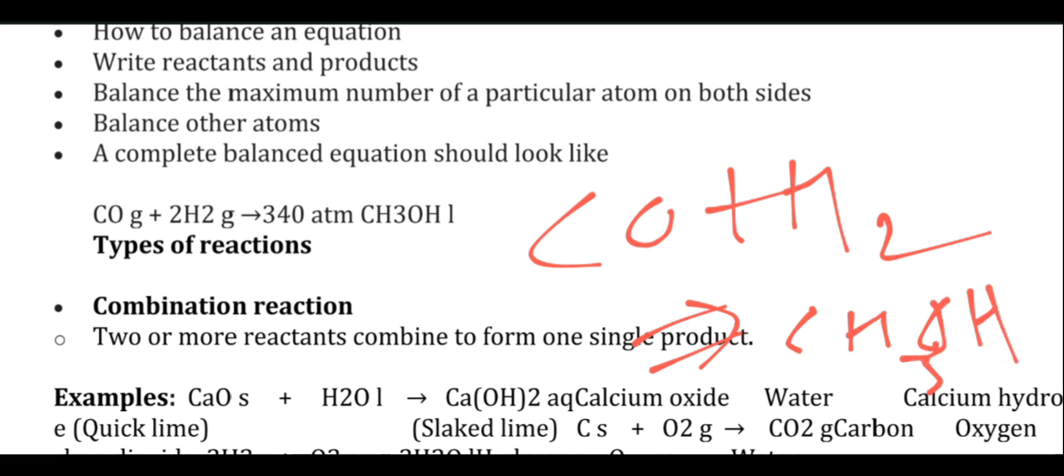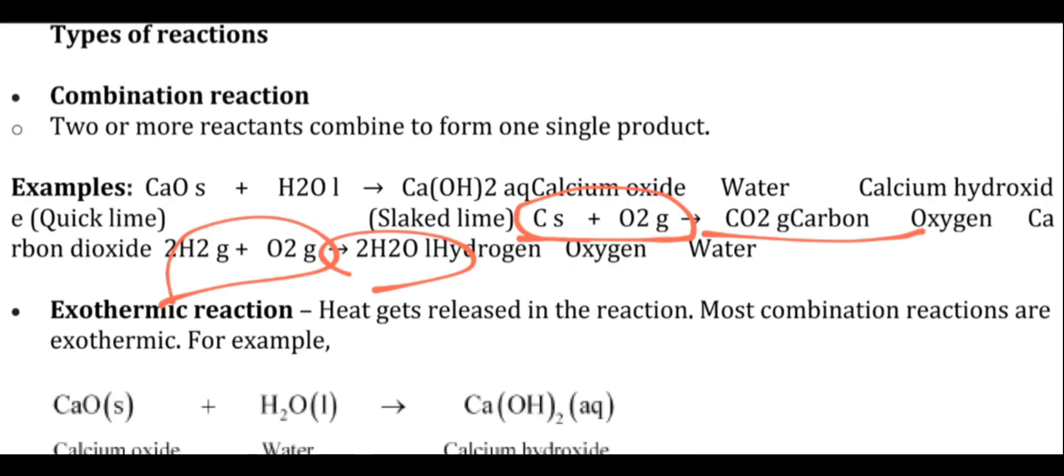What do we do to balance? You can see there are four hydrogens here, but only two hydrogens there. So we have to balance it. We balance the maximum number of a particular atom on both sides. We do left-hand side and right-hand side balancing to make them equal.